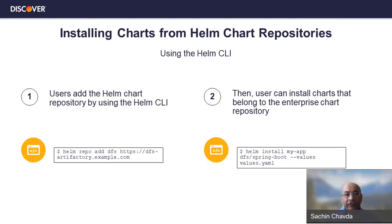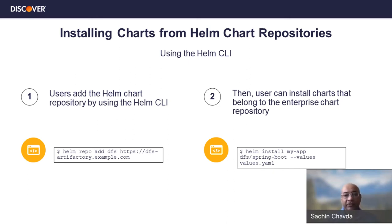The way this is structured: if an application developer needs to work with the Helm CLI, they need to install the Helm repository using the 'helm repo add' command. Once they add the Helm chart repository to their local workstation, they can work with a specific Helm chart and then issue 'helm install' or 'helm upgrade' releases based on that chart — in this example, the Spring Boot Helm chart — and provide their set of values.